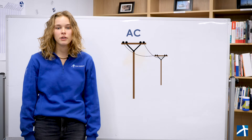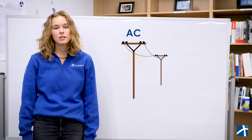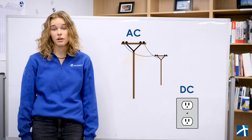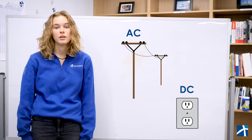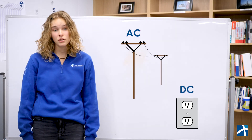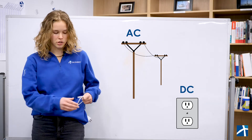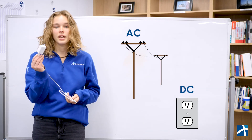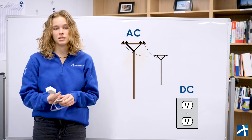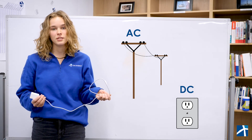Think of the power lines you see on the side of the road. But once the electricity gets to its final destination, like an outlet in your home, we need to change it back to DC so our appliances can use it. That is what the brick on a cell phone charger is for — it converts the AC power that was sent to your house to the DC power that your phone battery needs to charge.